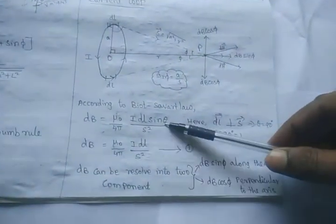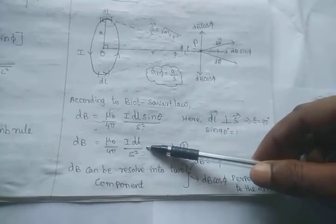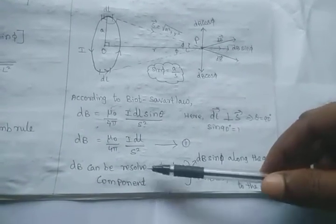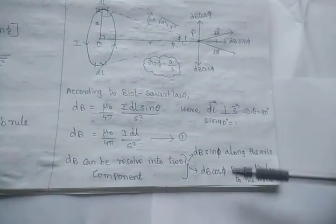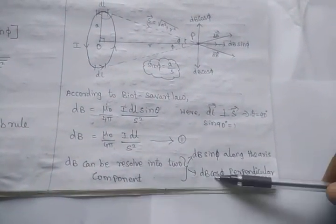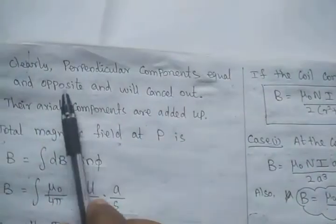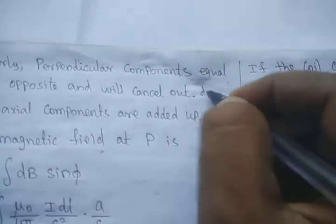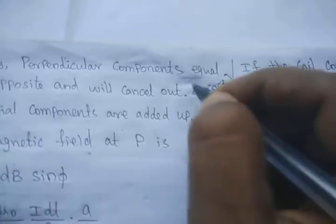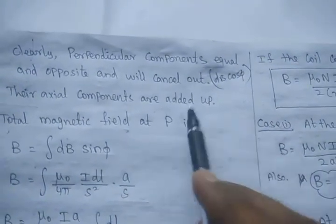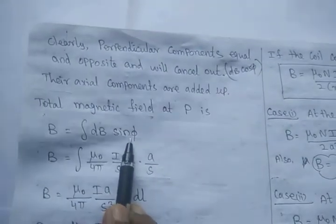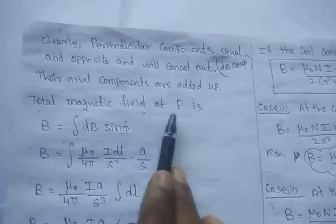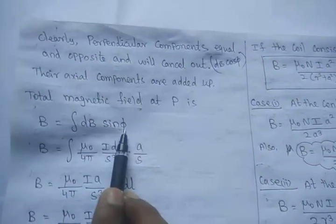By Biot-Savart law, substituting θ = 90°, we get dB. dB is resolved into the axial component dB sinθ and dB cosθ. The dB cosθ components cancel out — the perpendicular components are equal and opposite and cancel each other. The axial components dB sinθ add up. So the total magnetic field at point P is the integration of dB sinθ.